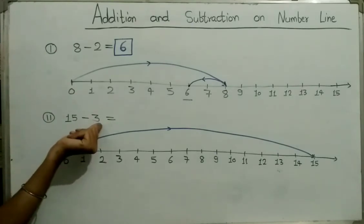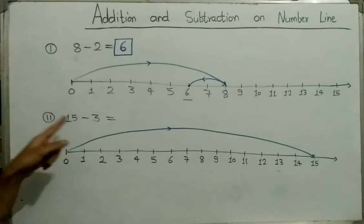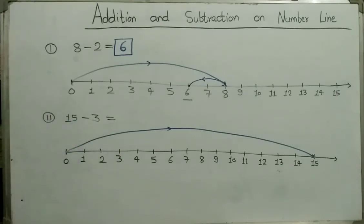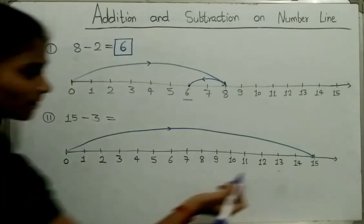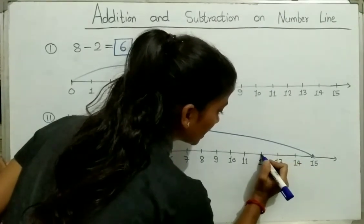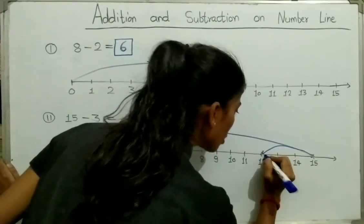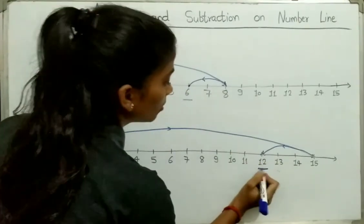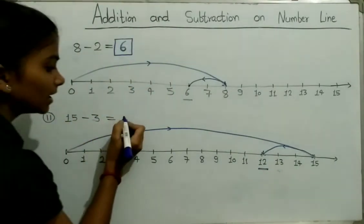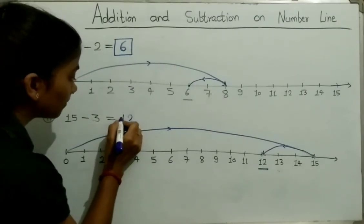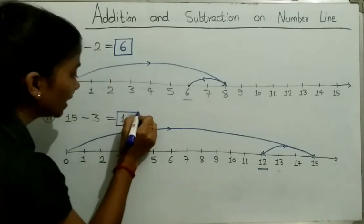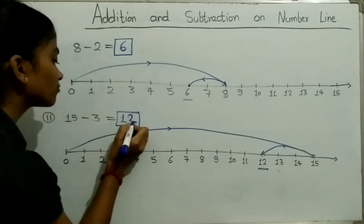Now the second number is 3 and the symbol is minus. So we will jump 3 steps to the left from 15: 1, 2, 3. We reach at 12. So the difference between 15 and 3 is equal to 12. 15 minus 3 is equal to 12.